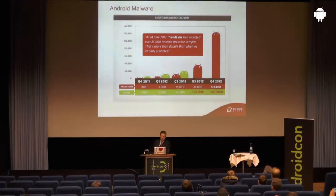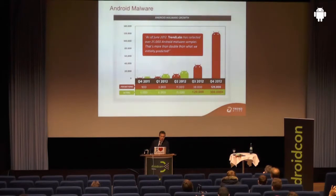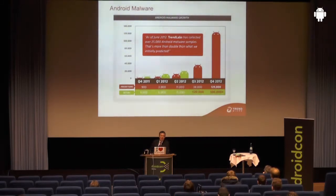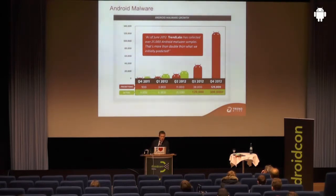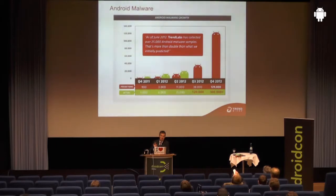We predicted 129,000 malicious apps by end of 2012. We had over 300,000 — so we were also wrong. For this year we predict over a million. These are not a million malicious apps with totally different code; we are talking about a million binaries, because the bad guys use the same code and scramble it. But we agreed to use the same counting method we use in the Windows world. One example of how they make money — and please don't use this as a business model, because the bad guys made a lot of money with it, but they are all in jail now.